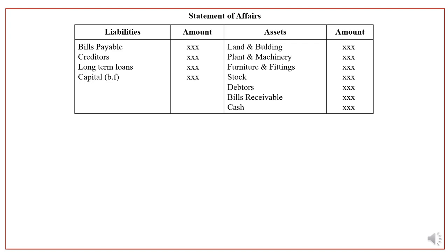In the asset side we record all assets of the business: land and building, plant and machinery, furniture and fittings, stock, debtors, bills receivable, cash, and so on. In the liability side we record all liabilities such as bills payable, creditors, long-term loans, etc. Normally a balance sheet tallies, but under the statement of affairs method we get a balancing figure. This balancing figure is called capital — opening capital if prepared at the beginning of the year, and closing capital if prepared at the end of the year.